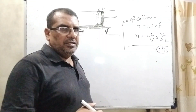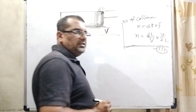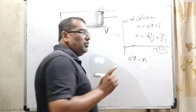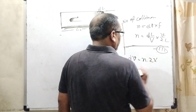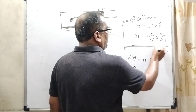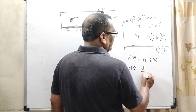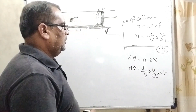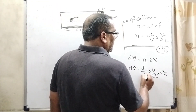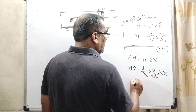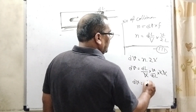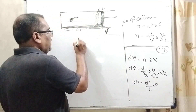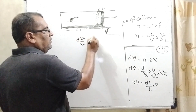After N collisions, the velocity increment dv equals N × 2V, since each collision increases velocity by 2V. Substituting the value of N from equation three: dv = (dL/V) × (v/2L) × 2V. The V and 2 cancel out, giving dv = v·dL/L. This confirms option C.